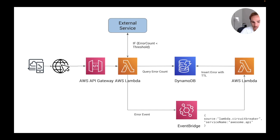So what we do is add items for each error of the service with, say, a 60-second timeout. Every time there's an error, we add an item. On the next calls, our first Lambda function checks how many errors exist for a specific service. If the count is less than the threshold, it calls the service. Otherwise, it just sends back the error response to the client.